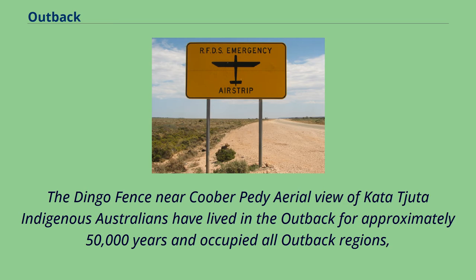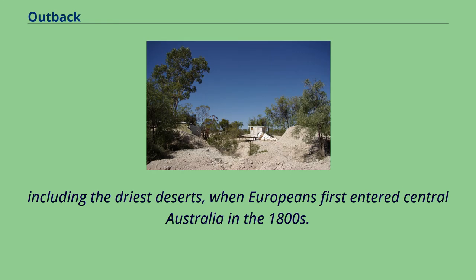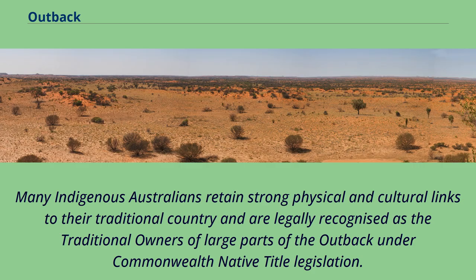Indigenous Australians have lived in the outback for approximately 50,000 years and occupied all outback regions, including the driest deserts, when Europeans first entered central Australia in the 1800s. Many Indigenous Australians retain strong physical and cultural links to their traditional country, and are legally recognised as the traditional owners of large parts of the outback under Commonwealth native title legislation.